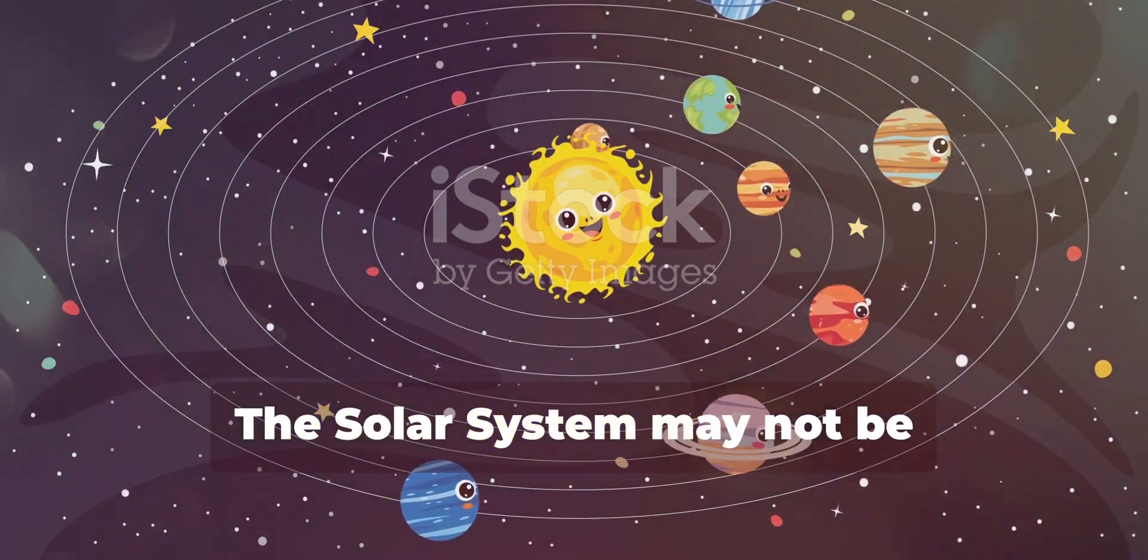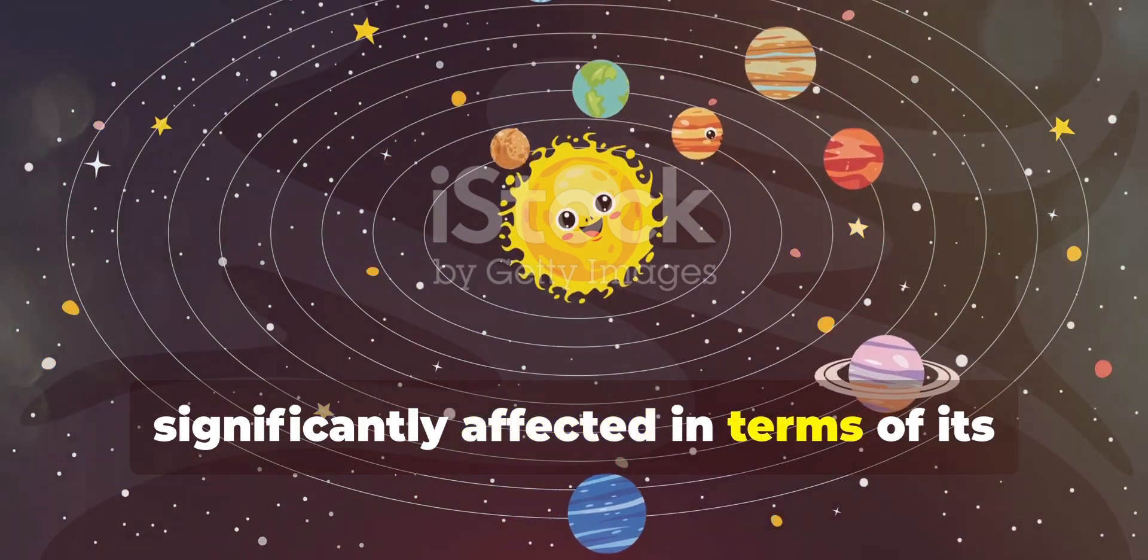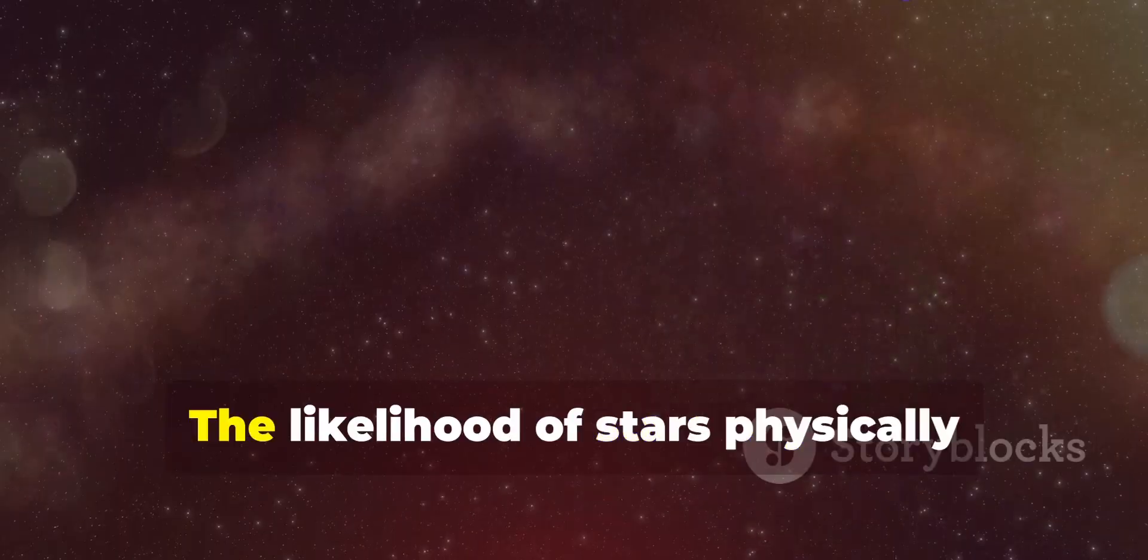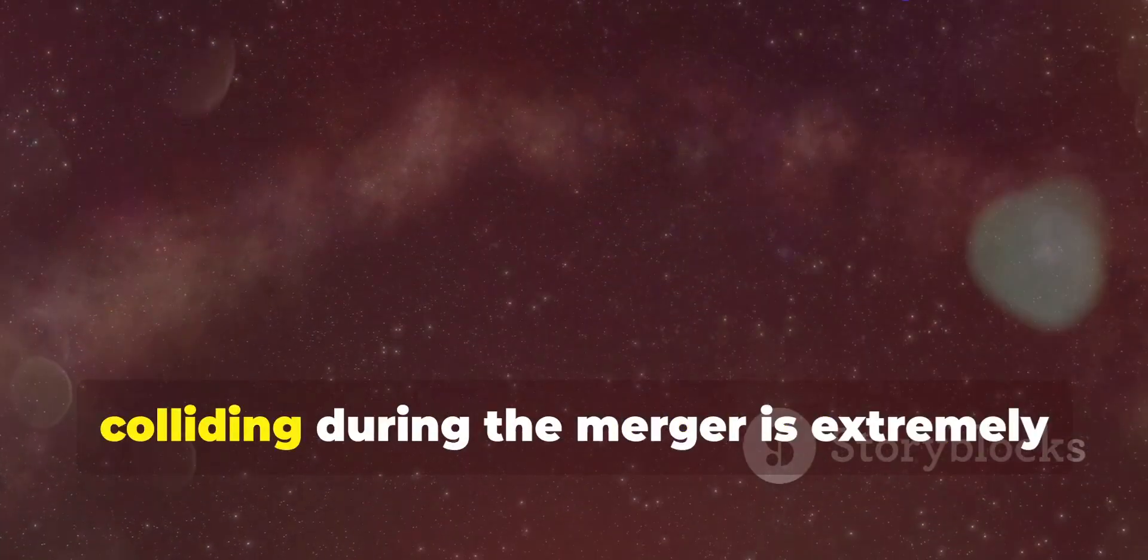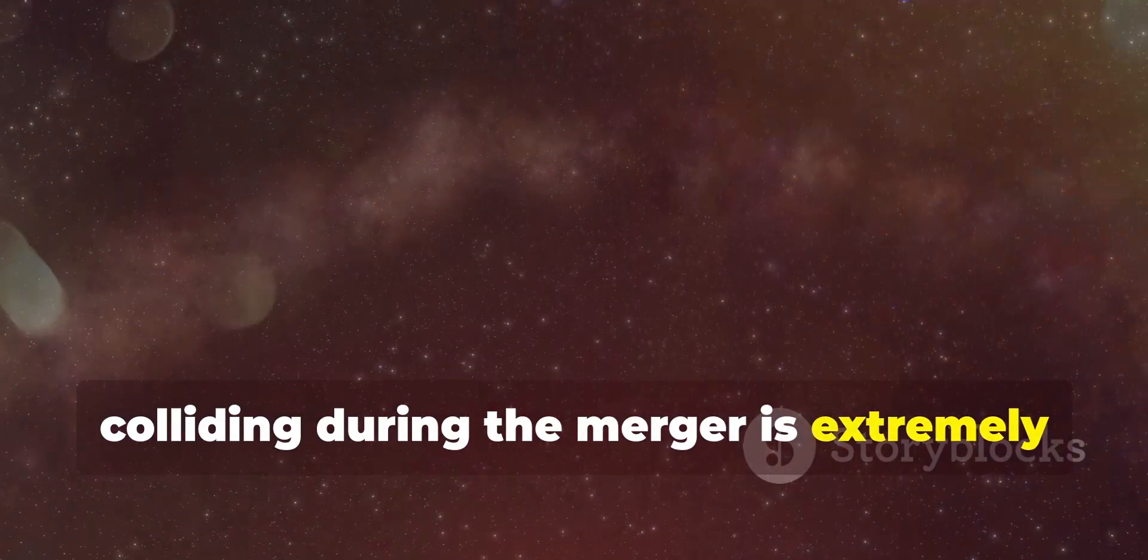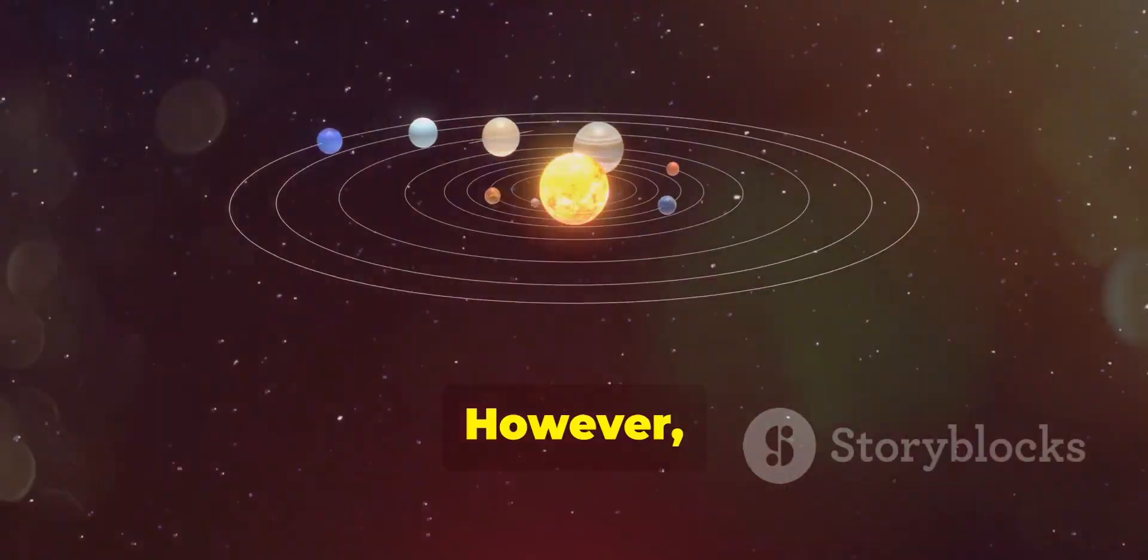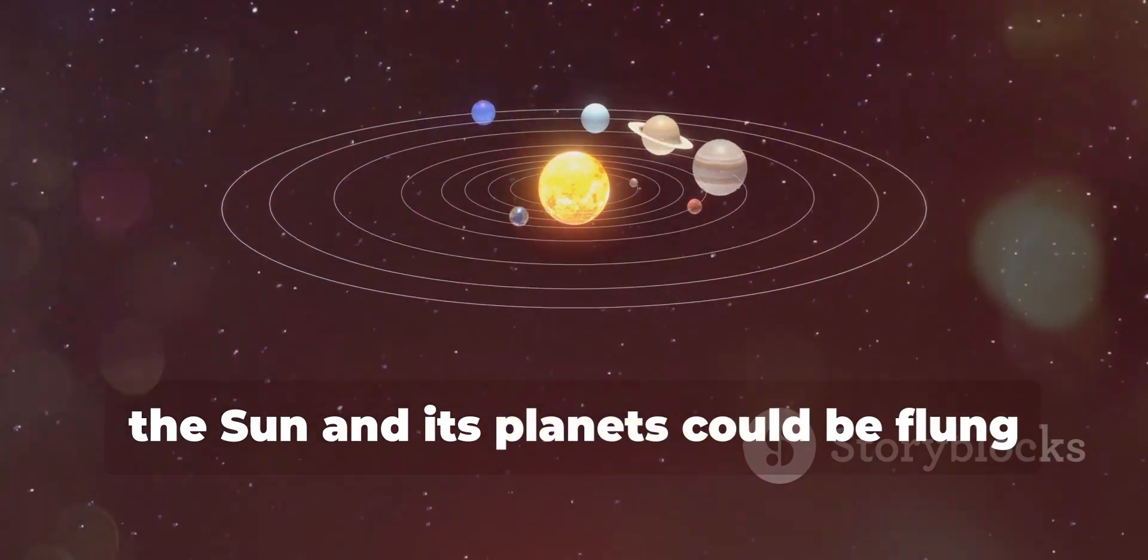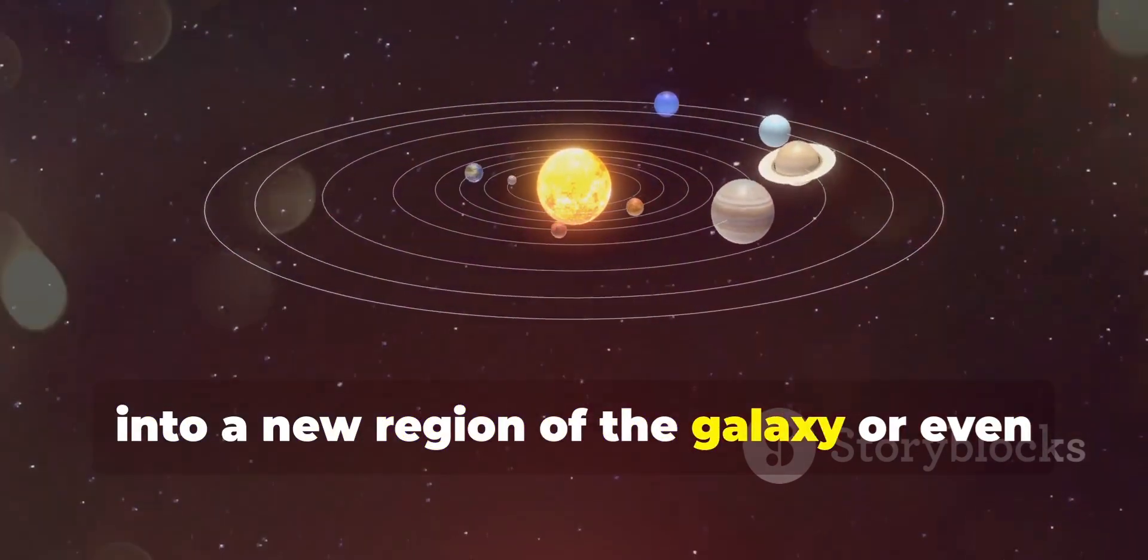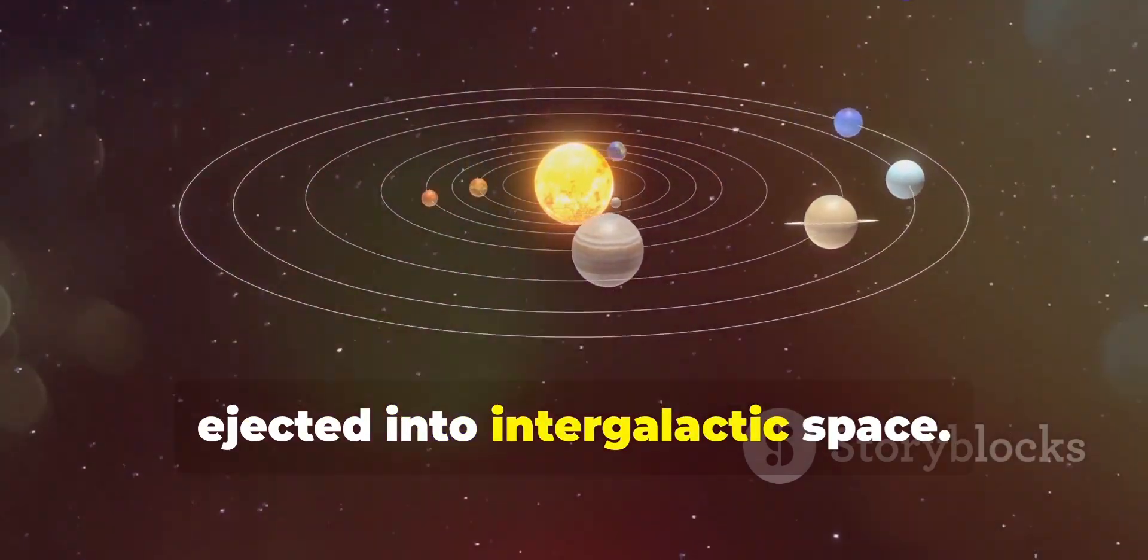The solar system may not be significantly affected in terms of its internal stability. The likelihood of stars physically colliding during the merger is extremely low due to the vast distances between them. However, the Sun and its planets could be flung into a new region of the galaxy or even ejected into intergalactic space.